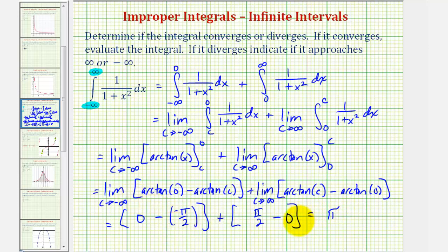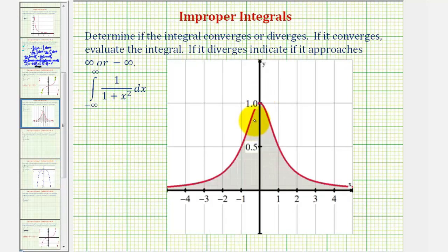Because the limit exists and is equal to pi, this is also the value of our definite integral, and therefore we can say the improper integral converges. Also, because the integrand — the function one divided by the quantity one plus x squared — is non-negative on this infinite interval, we can say that the area under this function and above the x-axis, even though it's unbounded, would be equal to pi square units.